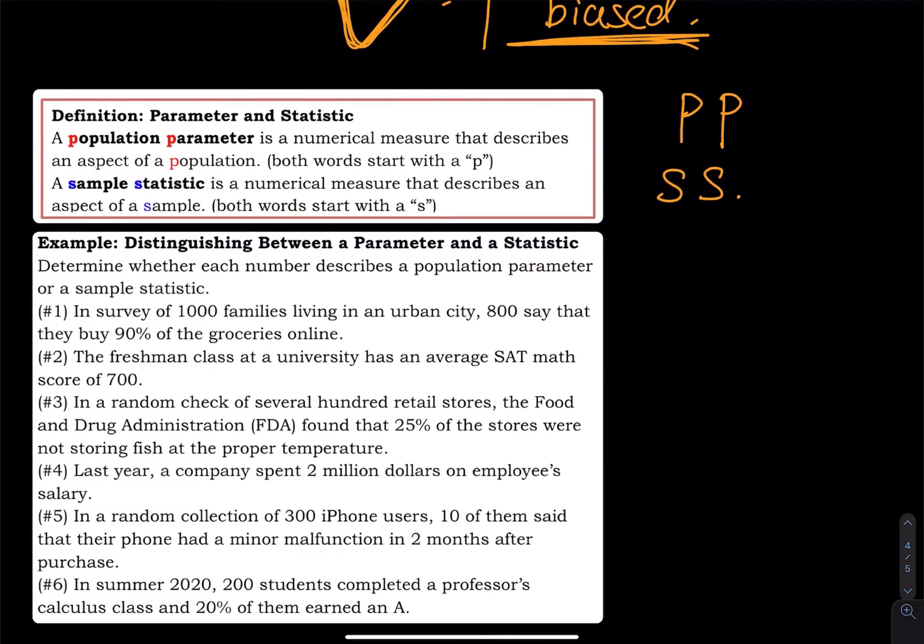Let's take a look at this problem. Determine whether each number describes a population parameter or a sample statistic. In a survey of 1,000 families, what is a survey of 1,000 families? When they mention this, a survey of 1,000 families, this is already a sample. So whatever describes that must be a statistic. 800 say that they buy 90% of the groceries online. So 800 is a number that describes the sample. So number one is a statistic.